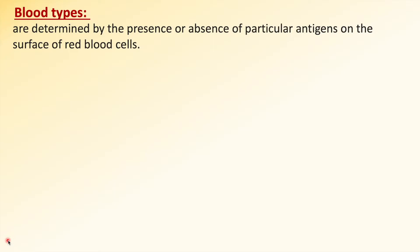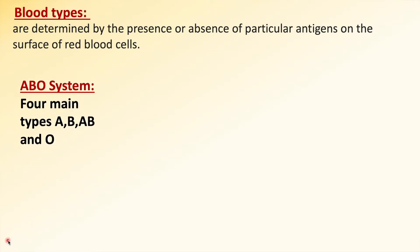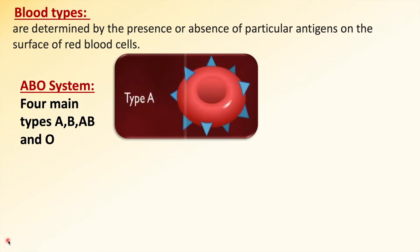Blood types are determined by the presence or absence of particular antigens, A and B, that we find on the surface of red blood cells. Because of these two antigens, we will have four main types of blood under a system we call the ABO system.